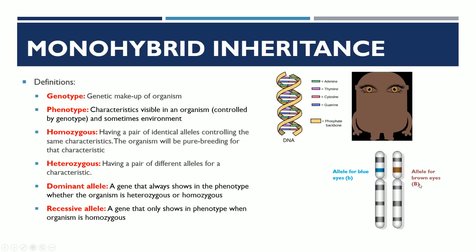Now, when you have two different alleles like this, one will actually, in most cases, dominate over the other. We call that a dominant allele — a gene that always shows up in the phenotype, whether or not the organism is heterozygous or homozygous. In this case, this individual has brown eyes, and so only the allele for brown eyes is expressed. That means the allele for brown eyes is dominant over the allele for blue eyes.